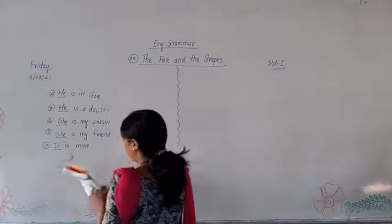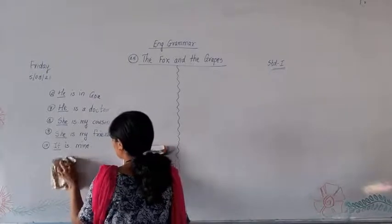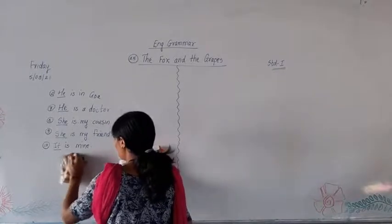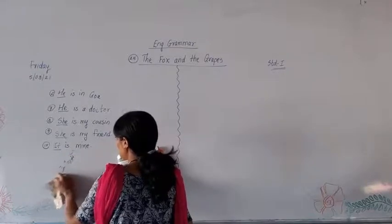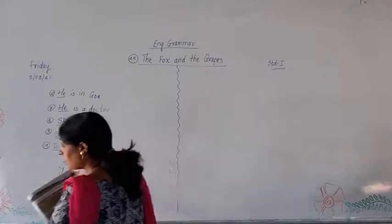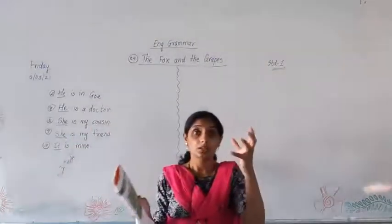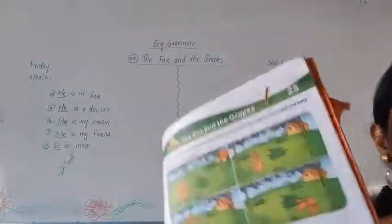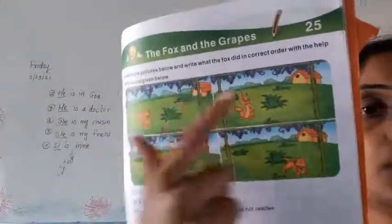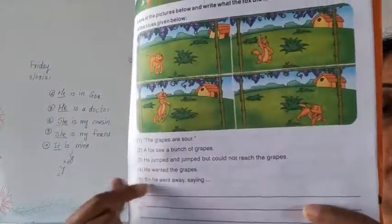The fox and the grapes. Which lesson are we going to study? The fox and the grapes. In this lesson, what we have to study is, here it is told that there is a fox and he sees a bunch of grapes. With the help of pictures, what we have to do? We have to arrange these 5 sentences in proper manner.